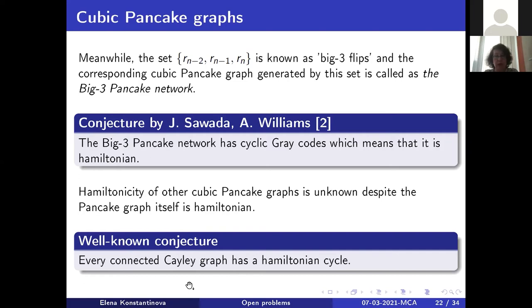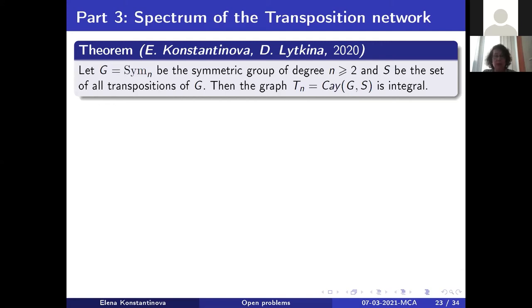There is a well-known conjecture that every connected Cayley graph has a Hamiltonian cycle. Sawada and Williams were interested in this graph because they thought it might be a counterexample to this conjecture. Other cubic pancake graphs can similarly be considered as potential counterexamples. We are interested in getting the cycle structure of these graphs, in particular to find gaps, and we have some results in this area.